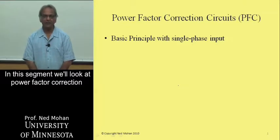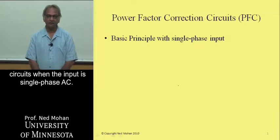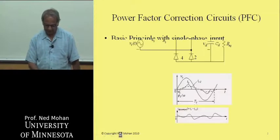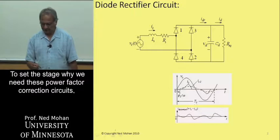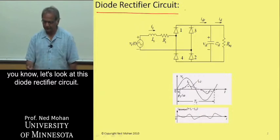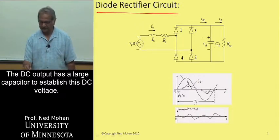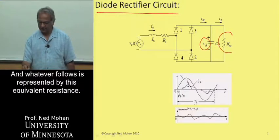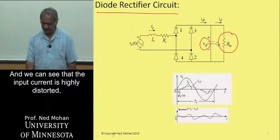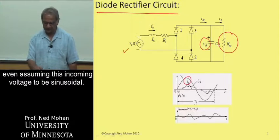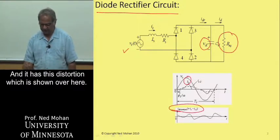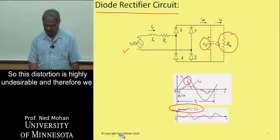In this segment, we will look at power factor correction circuits when the input is single-phase AC. To set the stage for why we need these circuits, let's look at this diode rectifier circuit where the DC output has a large capacitor to establish the DC voltage. Whatever follows is represented by an equivalent resistance, and we can see that the input current is highly distorted, even assuming the incoming voltage to be sinusoidal. This distortion is highly undesirable.